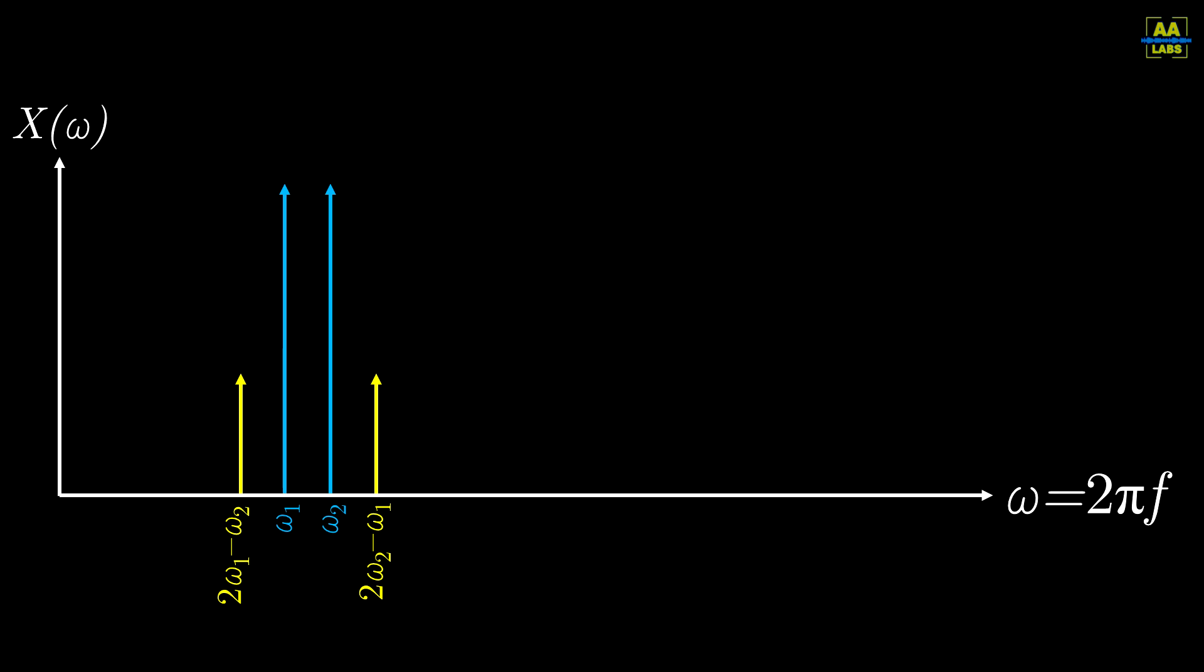Now, remember how we used a third order Taylor series? Well, a higher order Taylor series may be required to accurately define an amplifier characteristic. A fifth order Taylor series will produce two more products, and so on. Now as we get further away from the original frequencies, these IMD products get easier to filter out. So, you will most commonly see IMD3 listed on datasheets for RF equipment.